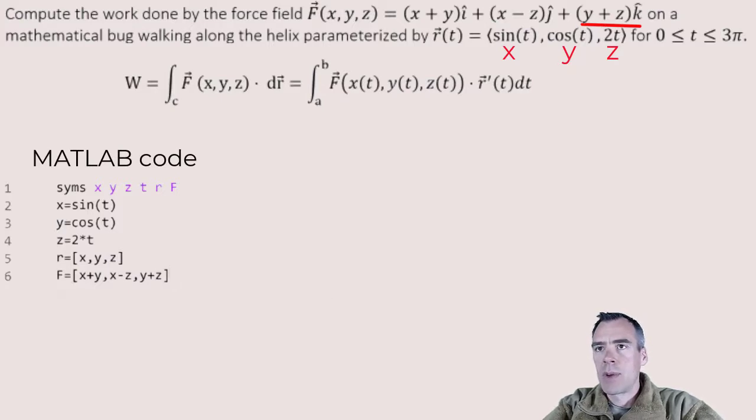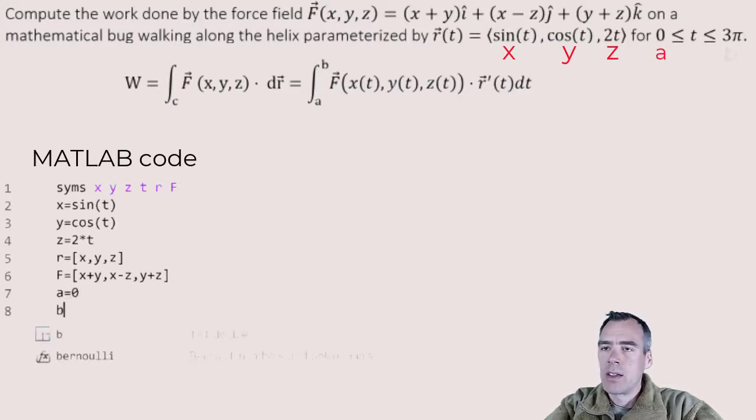And for good measure, we can just go ahead and define our start and stop time. So we're starting at T equals 0, and we're ending at B, where T is equal to 3 times π.